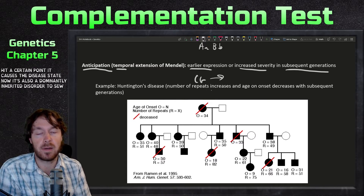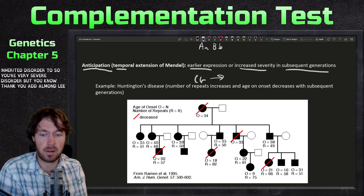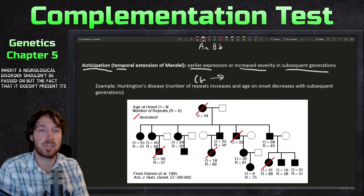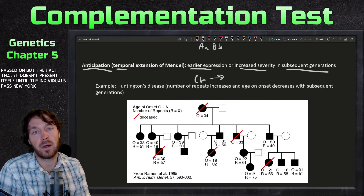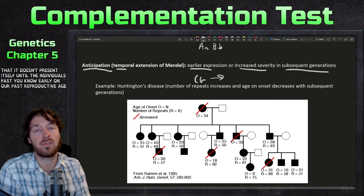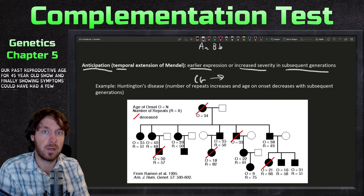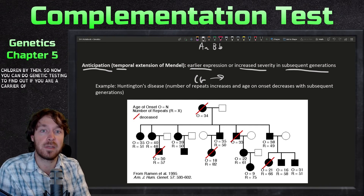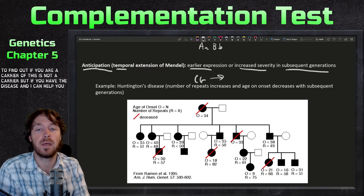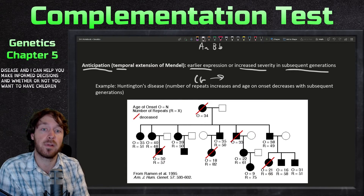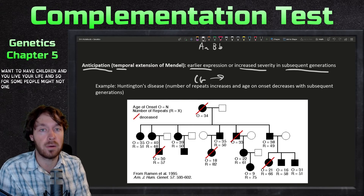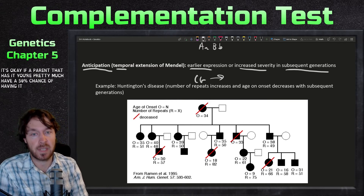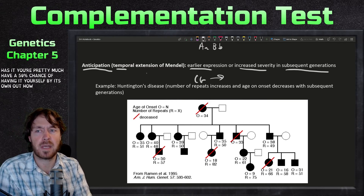Huntington's is also a dominantly inherited disorder. You might wonder why a dominant neurological disorder gets passed on — but it doesn't present itself until after reproductive age. A 45-year-old just showing symptoms could already have had several children. Today you can do genetic testing to find out if you have the disease, helping you make informed decisions. If a parent has it, you have roughly a 50% chance of having it yourself.